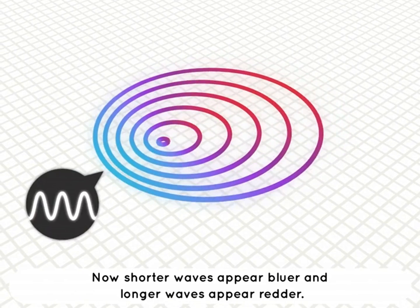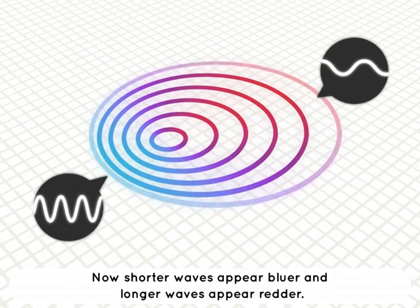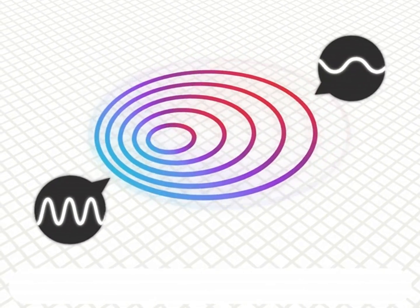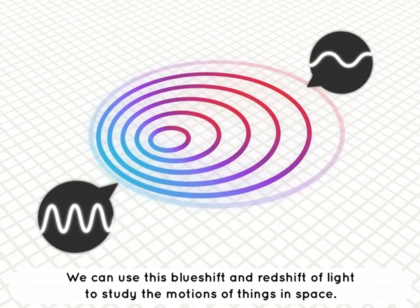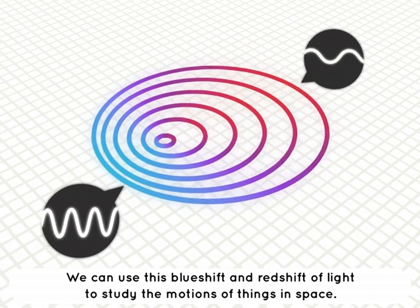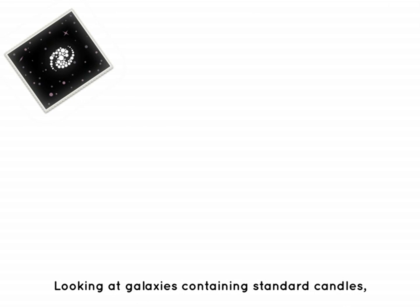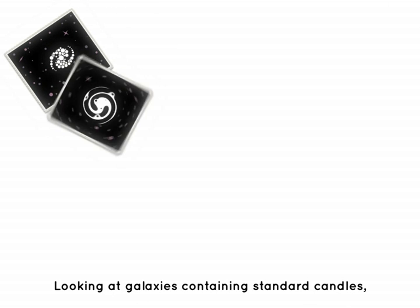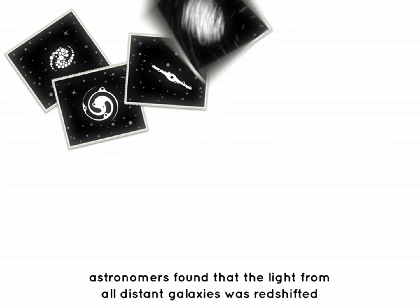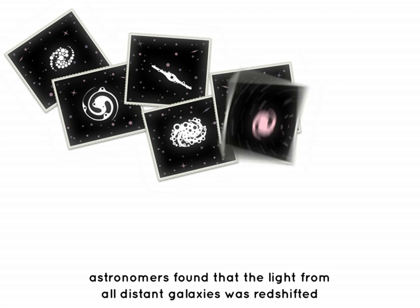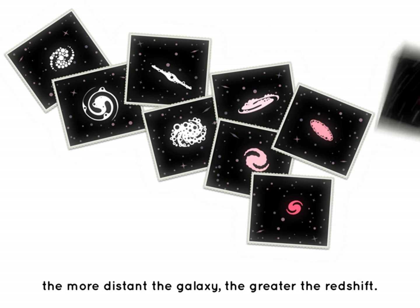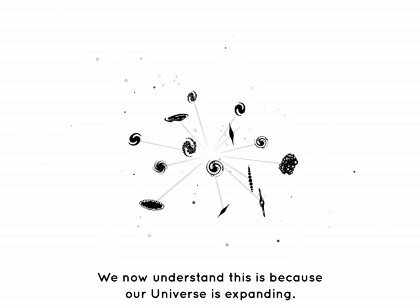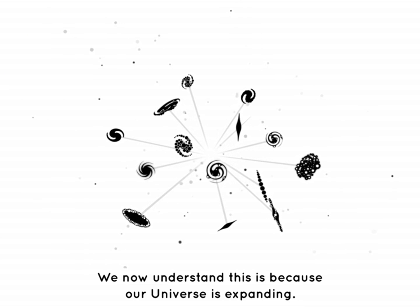Shorter waves appear bluer and longer waves appear redder. We can use this blueshift and redshift of light to study the motions of things in space. Looking at galaxies containing standard candles, astronomers found that the light from all distant galaxies was redshifted. The more distant the galaxy, the greater the redshift.